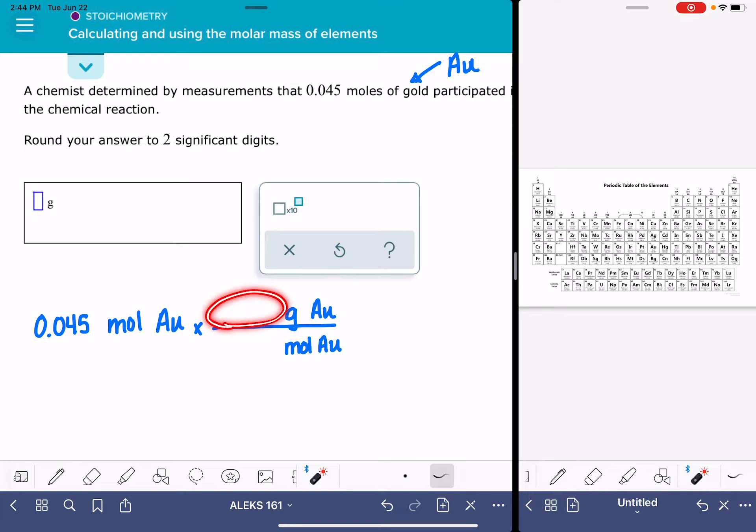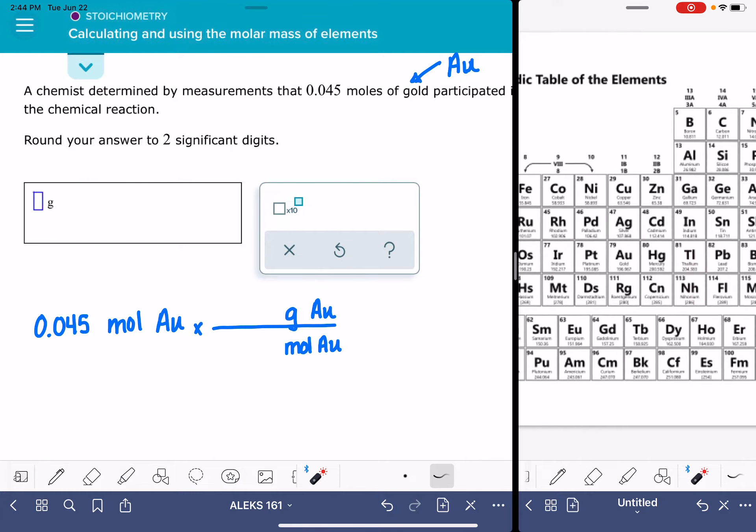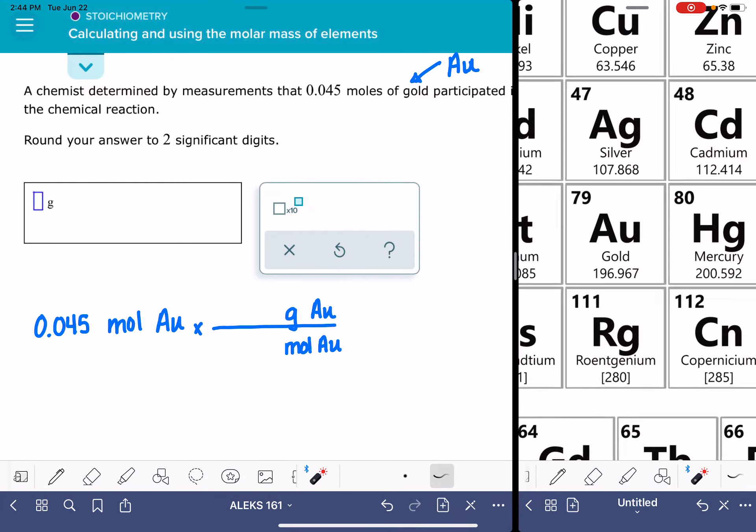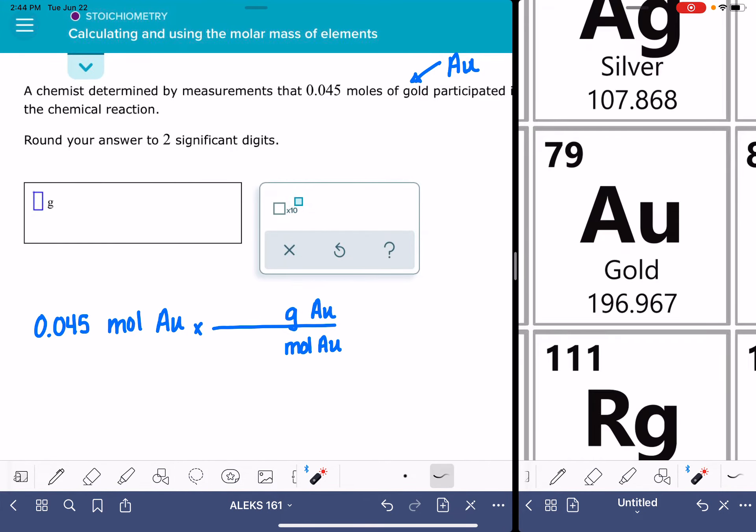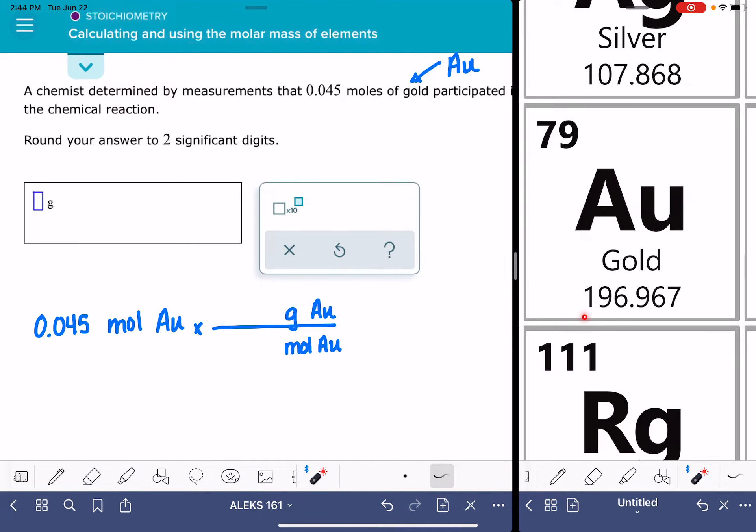So the last thing that we need to do in setting this problem up is figure out what numbers are going to go into these spots. This is going to be filled in with information from the periodic table. So we're going to go over to the periodic table and we're going to zoom way in on the element gold. And on that particular element in this spot right here, this number 196.967, that's going to give us the relationship between grams and moles for that particular element.